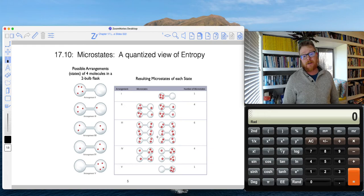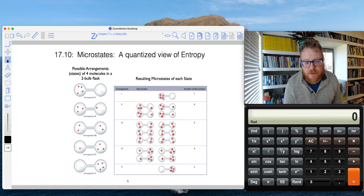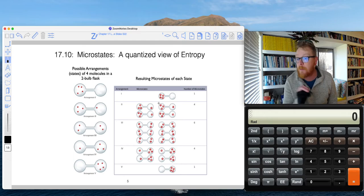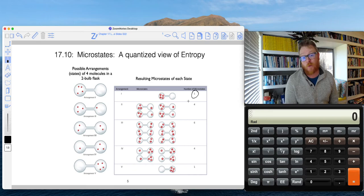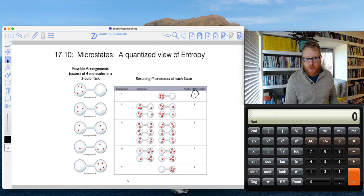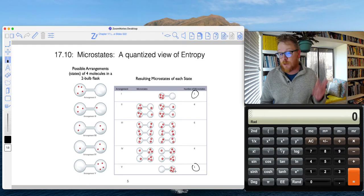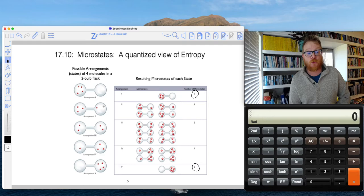Well, if we wanted to count up how many microstates are available in this, we would also need to put labels on these molecules. For example, this arrangement number one, suppose we called the molecules ABCD. I know that's tough, but just imagine we're able to ascribe labels to each of these molecules. Well, that's only going to be one microstate, because there's only one way that we can get all four of those molecules in the left most bulb. Similarly, if we shove all the same four molecules in the right most bulb, there's only one way to do that.